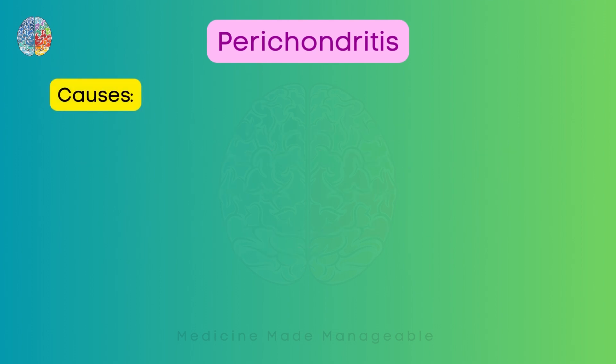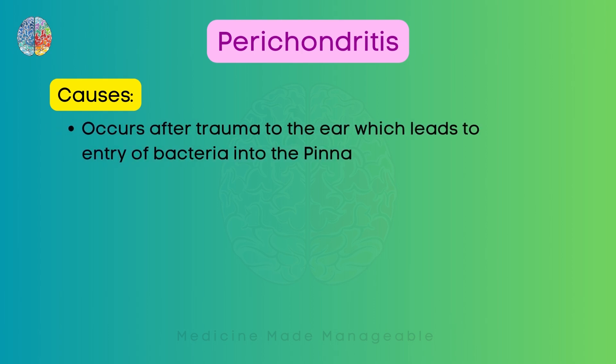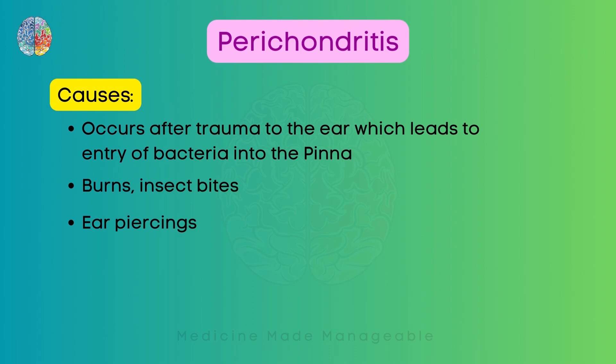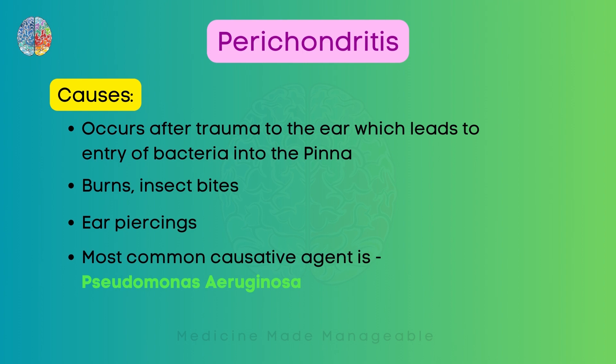Perichondritis occurs mainly after trauma to the ear, because this trauma leads to the entry of bacteria in the pinna. It can also occur after burns or insect bites, and also after ear piercings — especially if the person doing the piercings does not keep their equipment clean or hygienic. The most common causative agent is Pseudomonas aeruginosa.